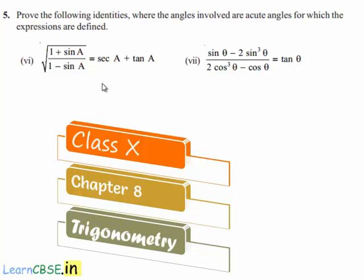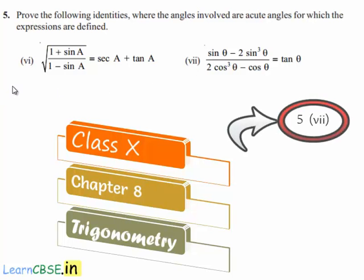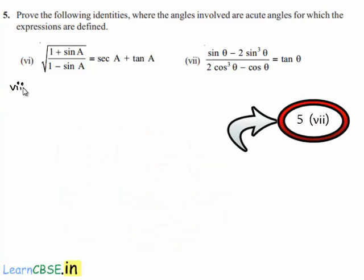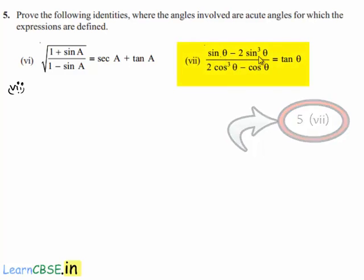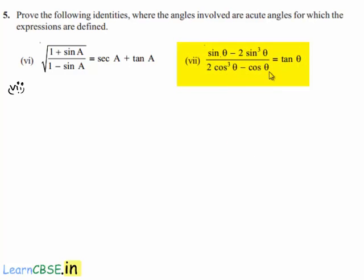Moving on to the seventh bit of the fifth problem, we are asked to prove that sin theta minus 2 sin cubed theta divided by 2 cos cubed theta minus cos theta is equal to tan theta.